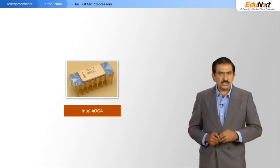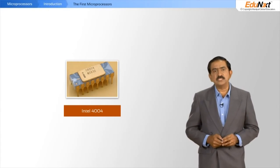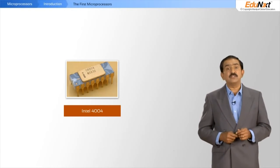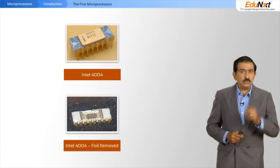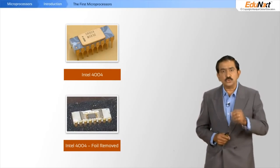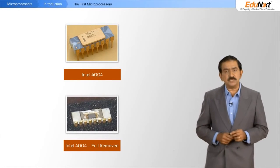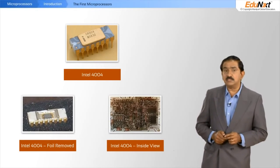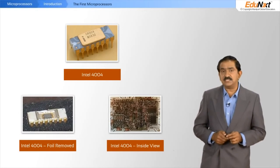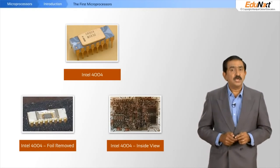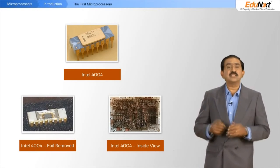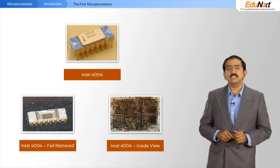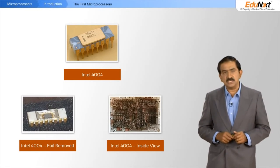The picture on the screen is an actual image of the 4004. If you remove the golden foil you see the chip underneath, and if you remove the heat sinks and look through a microscope, you would see the architecture of the 4004 with all its connecting wires.